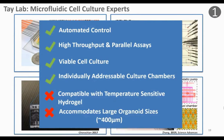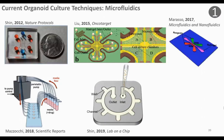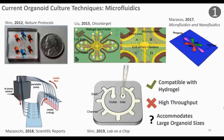With our previously developed technologies, we have created automated control, high-throughput parallel assays, viable cell culture, and individually addressable culture chambers. However, the requirement of an extracellular matrix hydrogel that is temperature-sensitive — we work with it at around 4°C, and as it warms up it solidifies — makes all these previously developed technologies obsolete due to clogging of the fluidic channels. Also, most of our devices are around 100 to 200 micrometers tall and would not be able to accommodate the large organoid size of around 400 micrometers.